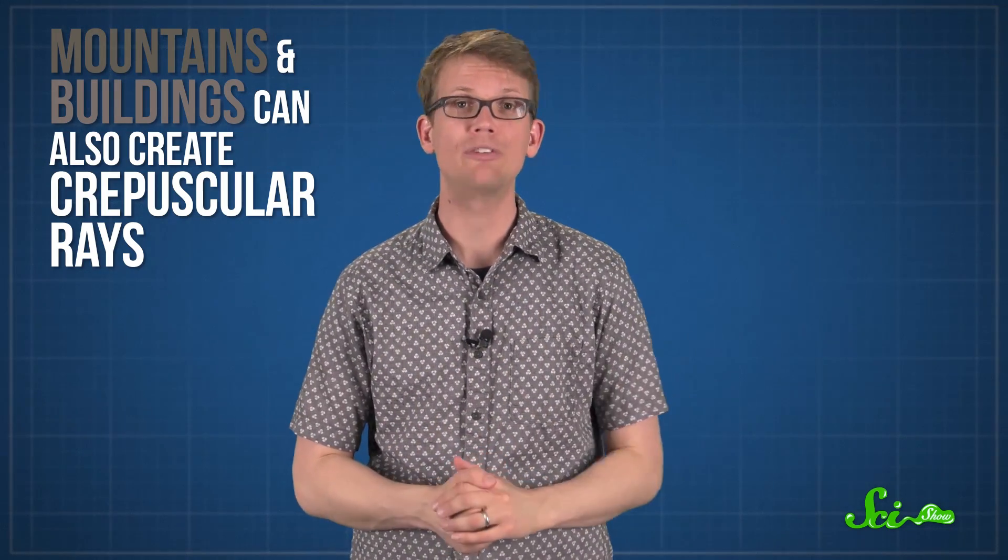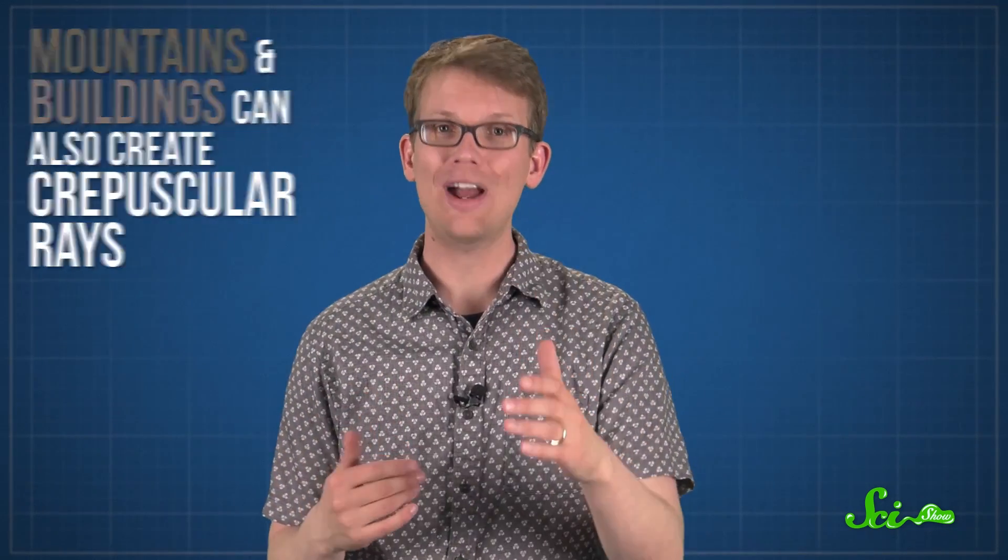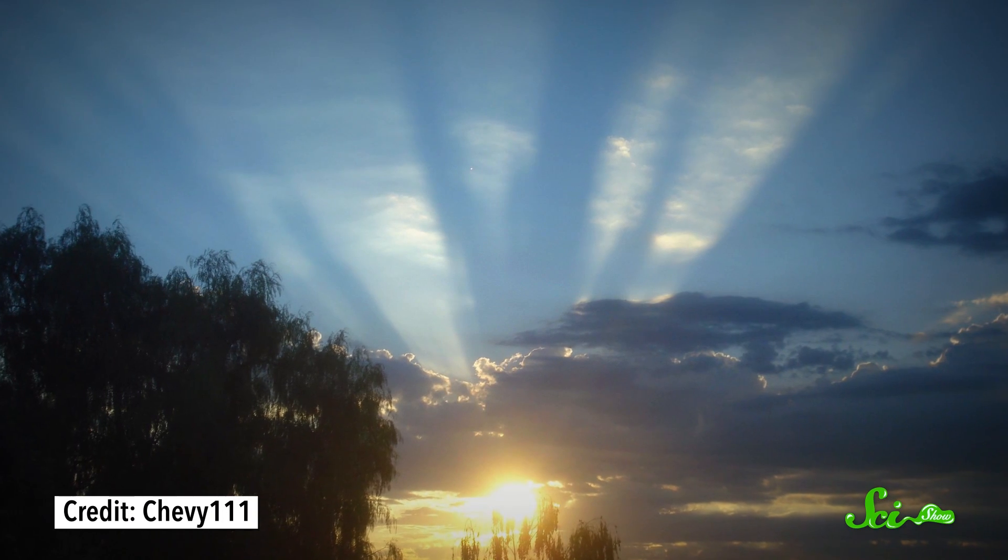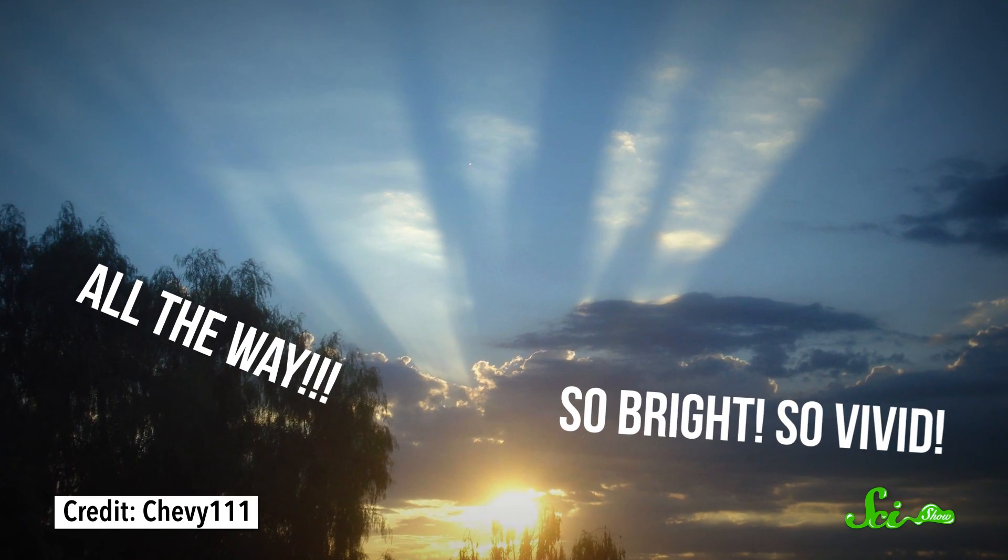Mountains and buildings can also create crepuscular rays. And if the sun is at the horizon, like at dawn or dusk, you can get crepuscular rays that stretch all the way across the sky. So intense.